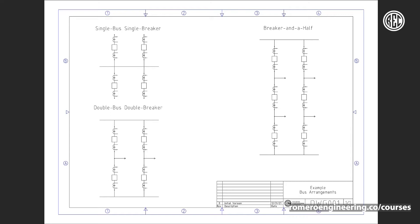Bus faults can cause severe system disturbances because we have multiple sources that will feed the fault. Bus faults typically have very high fault current magnitudes and are therefore very severe in the system. There are many different bus configurations, each with its own pros and cons. In this lecture, we're going to look at three of them: the single bus single breaker (also called a straight bus configuration), the double bus double breaker configuration, and the breaker and a half configuration.